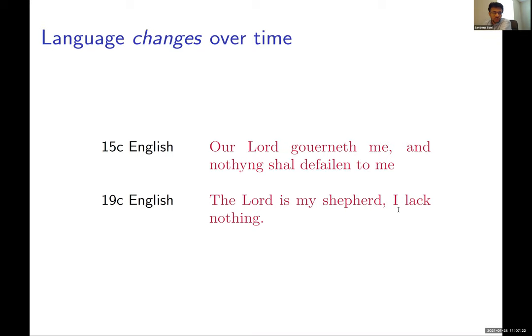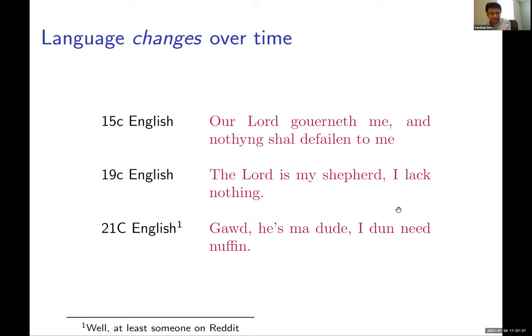The modern way of saying the same thing in 21st century English — at least as someone put it on Reddit — is 'God is my dude, I don't need nothing.' It's an example where over centuries you see new words getting introduced in vocabulary. You wouldn't have made sense of what is written in 21st century English back in 15th century English, and we find it challenging to fully understand the earlier text today.